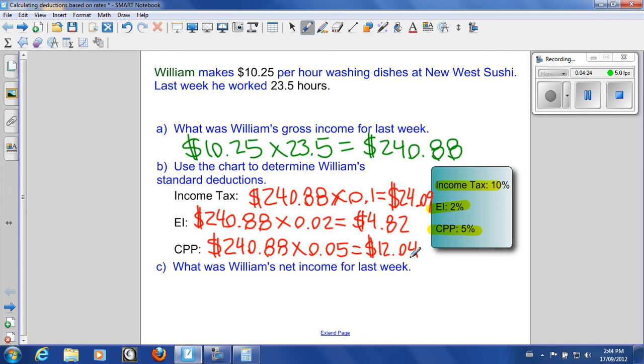Part C wants to know what was William's net income for last week. So what we need to do is we need to take the gross income here, which was $240.88. And we are going to subtract off all the deductions. What do we have? We have $24.09, we have $4.82, and we have $12.04.